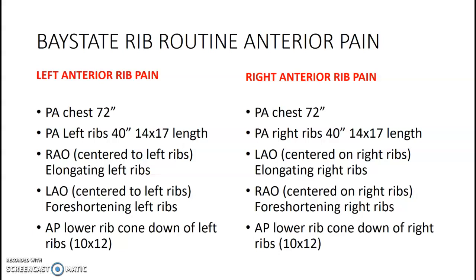Breaking down our routines — anterior versus posterior. If the patient comes in with an order that includes a chest, always start with the chest and then move on. For left anterior rib pain: start with a PA chest at 72 inches, then move your tube to 40 inches for ribs. Do a straight-on PA of the left (side of interest), then an RAO position centered with your light over the left ribs — RAO elongates the left ribs. Then LAO, still centered on the left, which foreshortens the left ribs. Then do an AP lower cone-down to the left using a 10 by 12 cassette.